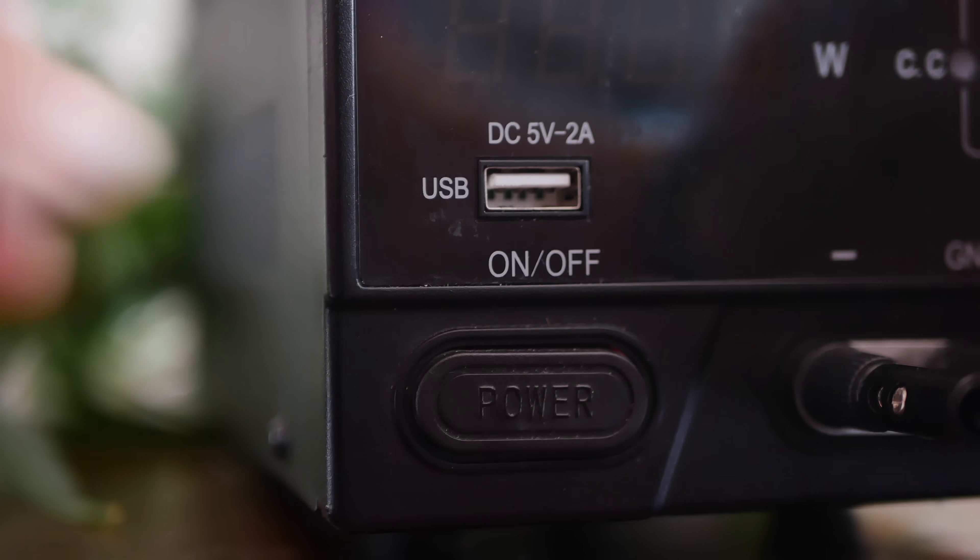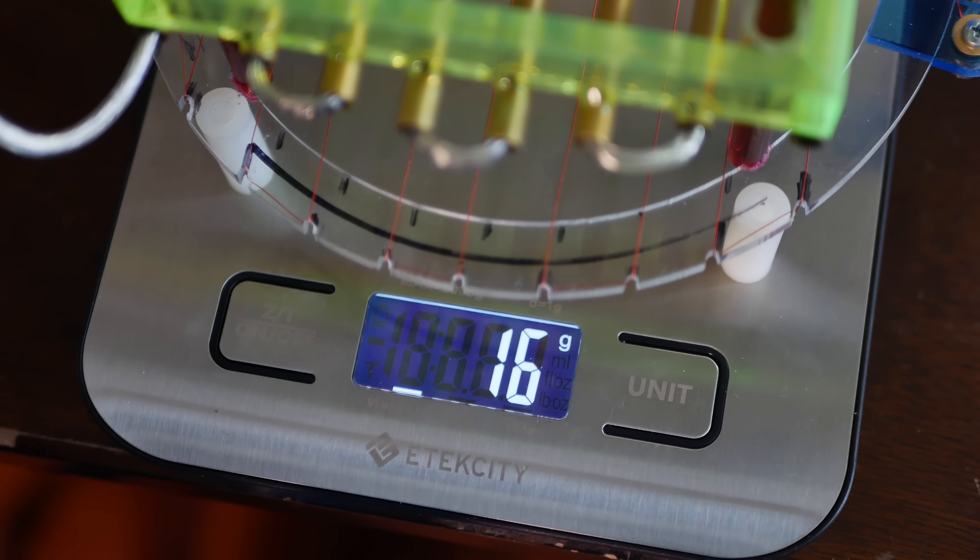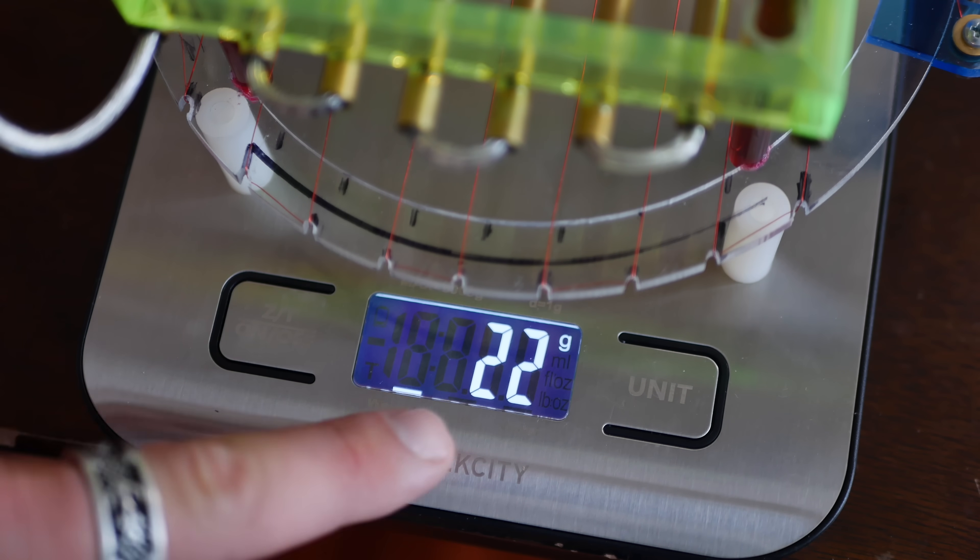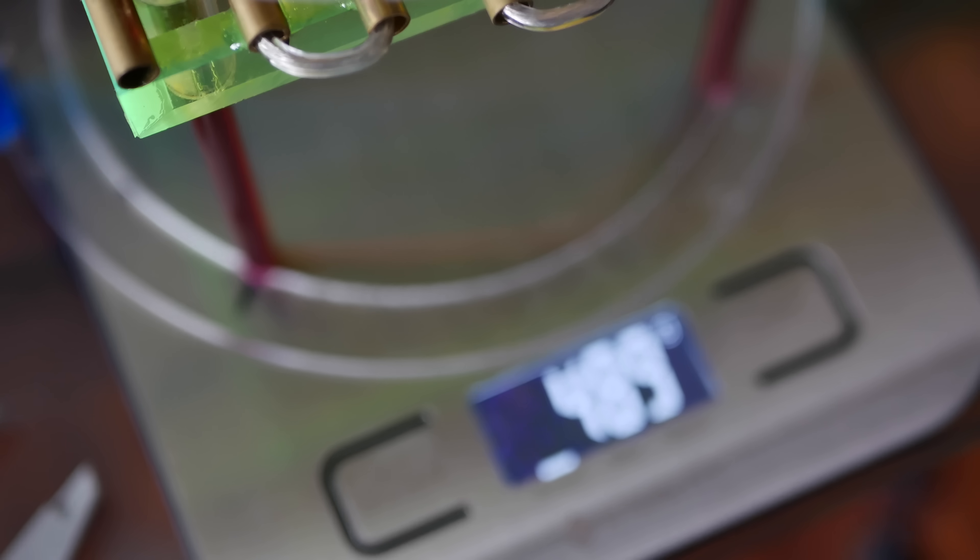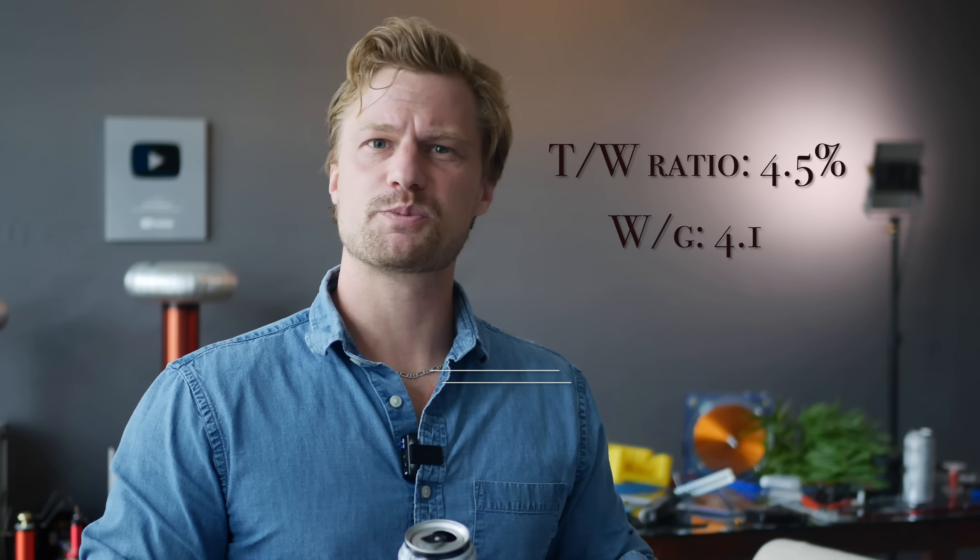Okay, 21 grams of thrust. Oh, 22 grams of thrust. That's not bad. 22 grams of thrust isn't a bad start. It's actually the weight of this empty can right here. And the thruster weighs 490 grams, so that's about a 4.5% thrust to weight ratio at around 4.1 watts per gram of thrust.